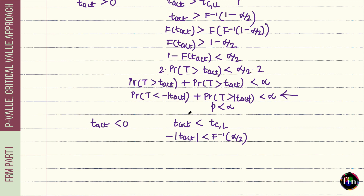In this short video, we used basic concepts from probability and distributions to establish the equivalence of the two approaches for making a decision in a hypothesis test: the critical value approach and the p-value approach.